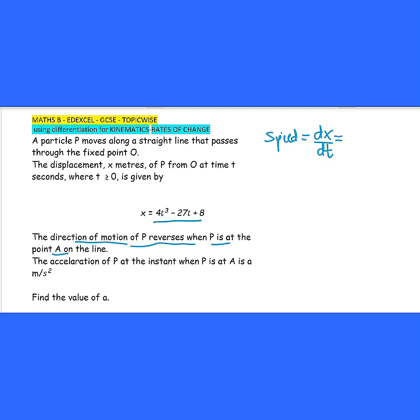Then we differentiate this equation. It will become 3 times 4, so 3 down becomes 12t². The 3 reduced by 1 becomes 2 minus 27t to the power of 1 only becomes minus 27. And the constant becomes 0.